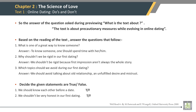Based on the reading of the text, answer the questions that follow. What is one great way to get to know someone? The answer is: to know someone, one should spend time with her or him. Why shouldn't we be rigid in our first dating? The answer is: we shouldn't be rigid because first impressions are not always the whole story.